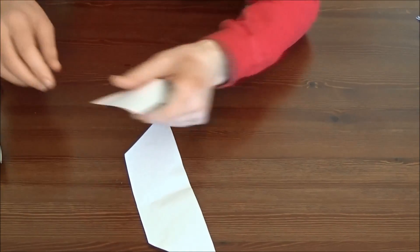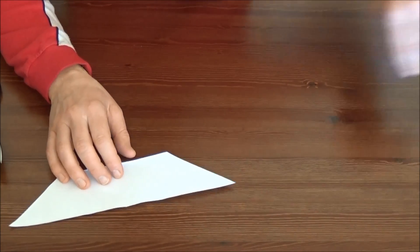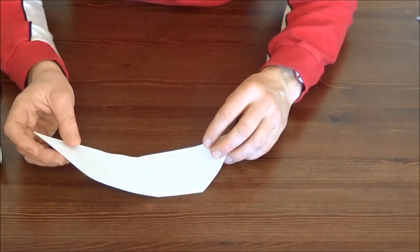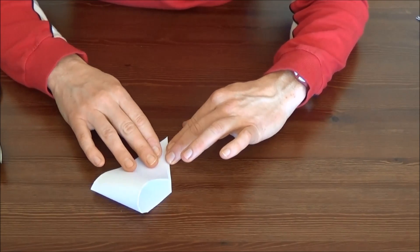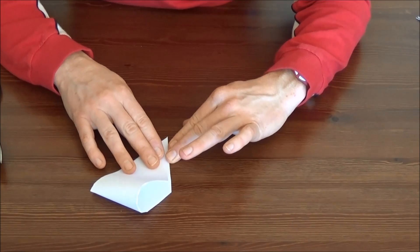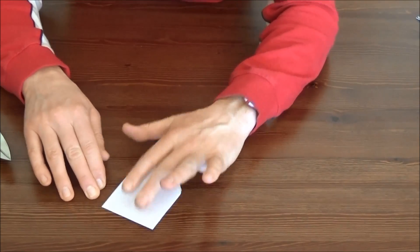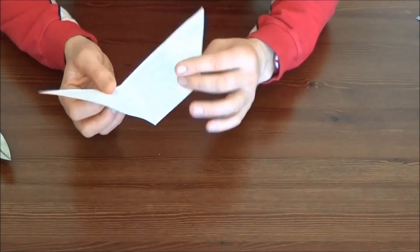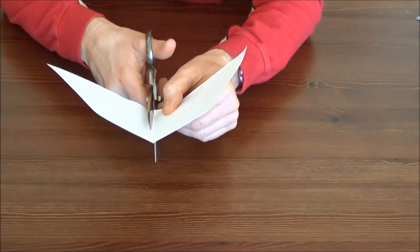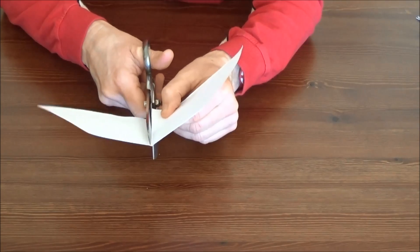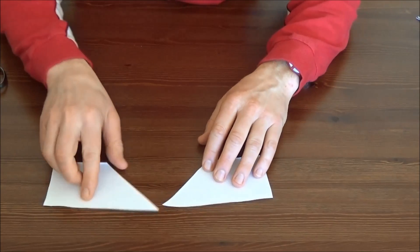Take the trapezoid and fold it in half so the resulting crease bisects the base. Then cut along this crease so that you have two smaller trapezoids.